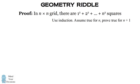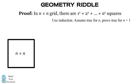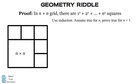We'll use induction so we'll assume the formula is true for n and we'll prove it's true for n+1. So we have an n by n grid and we're going to add on 1x1 squares on the side so that we have an (n+1) × (n+1) grid.